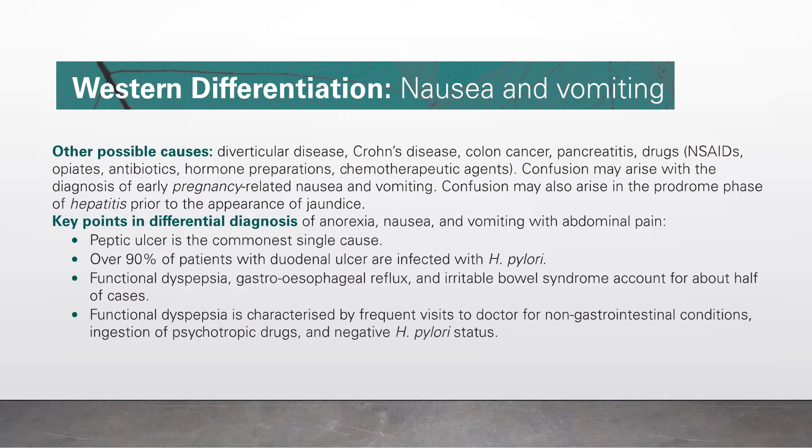Key points in differential diagnosis of anorexia, nausea, and vomiting with abdominal pain: peptic ulcer is the commonest single cause. Over 90% of patients with duodenal ulcer are infected with H. pylori. Functional dyspepsia, gastroesophageal reflux, and irritable bowel syndrome account for about half of the cases. Functional dyspepsia is characterized by frequent visits to doctors for non-gastrointestinal conditions, ingestion of psychotropic drugs, and negative H. pylori status.